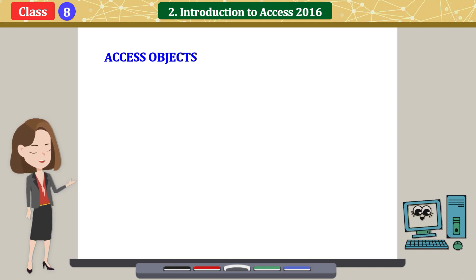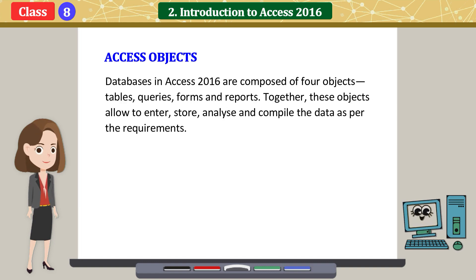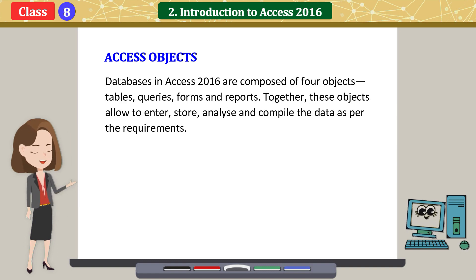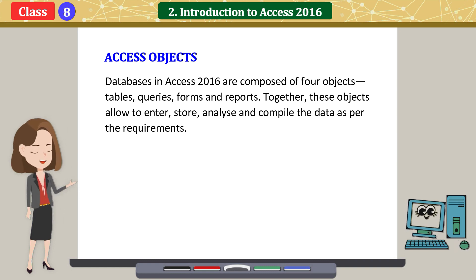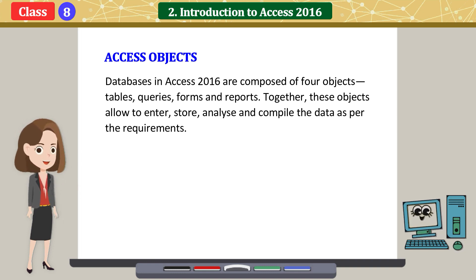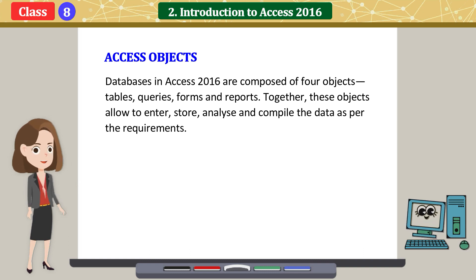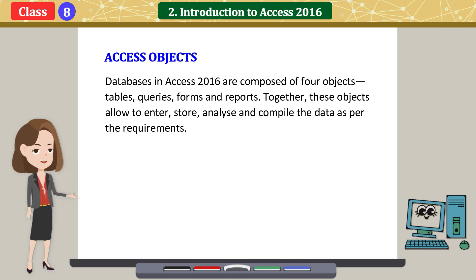Access Objects: Databases in Access 2016 are composed of four objects — tables, queries, forms, and reports. Together, these objects allow users to enter, store, analyze, and compile the data as per the requirements.